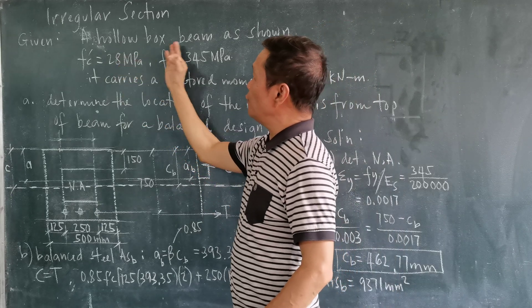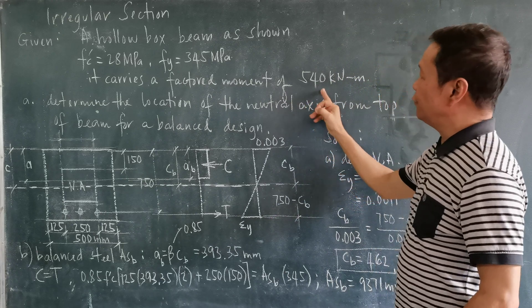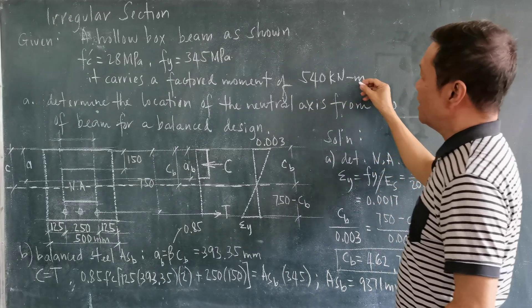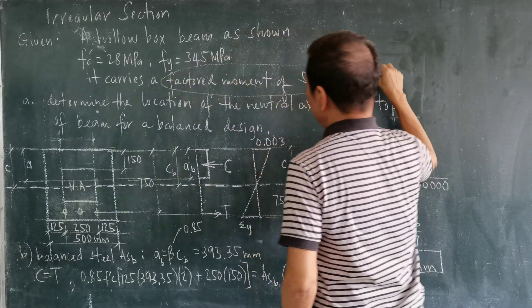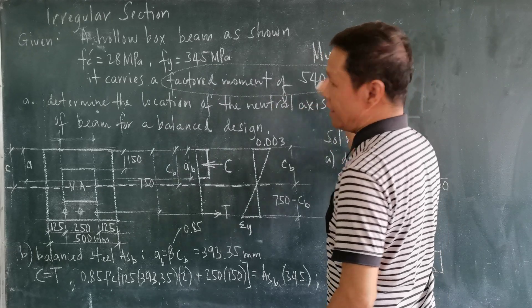We will assume that the hollow box beam carries a factored moment of 540 kN-m. If it is a factored moment, it means that it is already the ultimate moment.